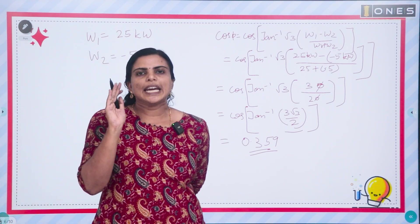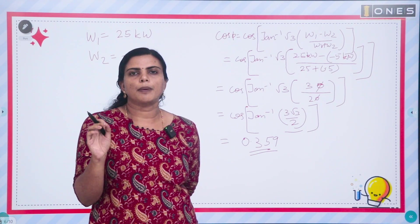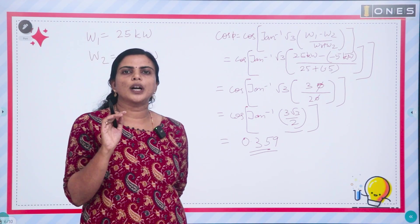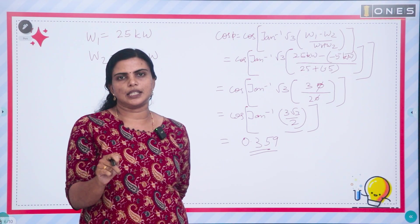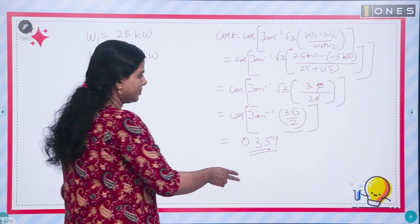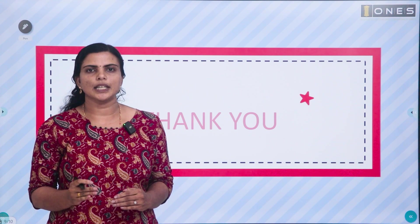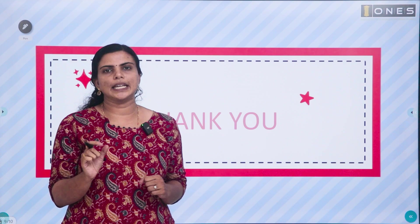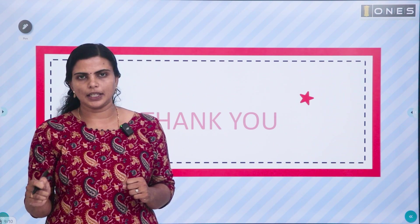Key rules to remember: when there is a negative wattmeter reading, the power factor is low — between 0 and 0.5. When both wattmeter readings are positive, the power factor is between 0.5 and 1. When one wattmeter reading is double the other, the power factor is exactly 0.866 and the power factor angle is 30 degrees.